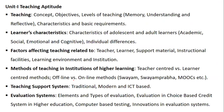The syllabus for Unit 1 consists of teaching — its concepts, objectives, and levels. There are three levels given in the syllabus. It also covers learner characteristics including academic, social, emotional, and cognitive characteristics with individual differences. Factors include learner, teacher, support material, and learning environment. Methods of teaching include SWAYAM, SWAYAM PRABHA, and MOOCs. Teaching support systems cover traditional, modern, and ICT-based teaching, plus the evaluation system.